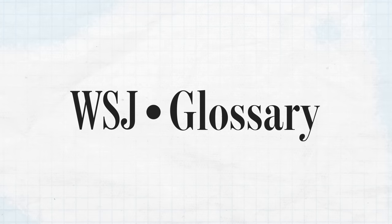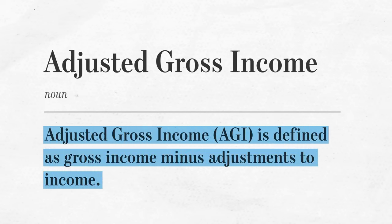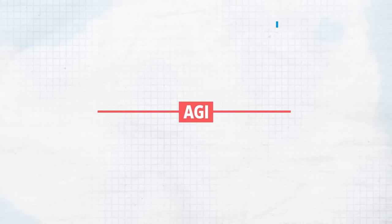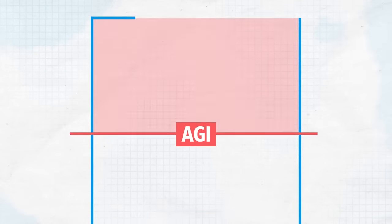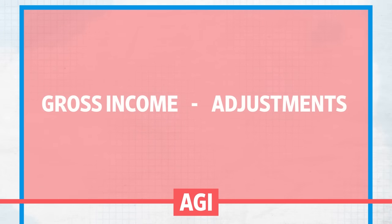The IRS defines adjusted gross income, or AGI, as your gross income minus adjustments to income. It's commonly referred to as "the line." Above the line, you have two things: your gross income and your adjustments.